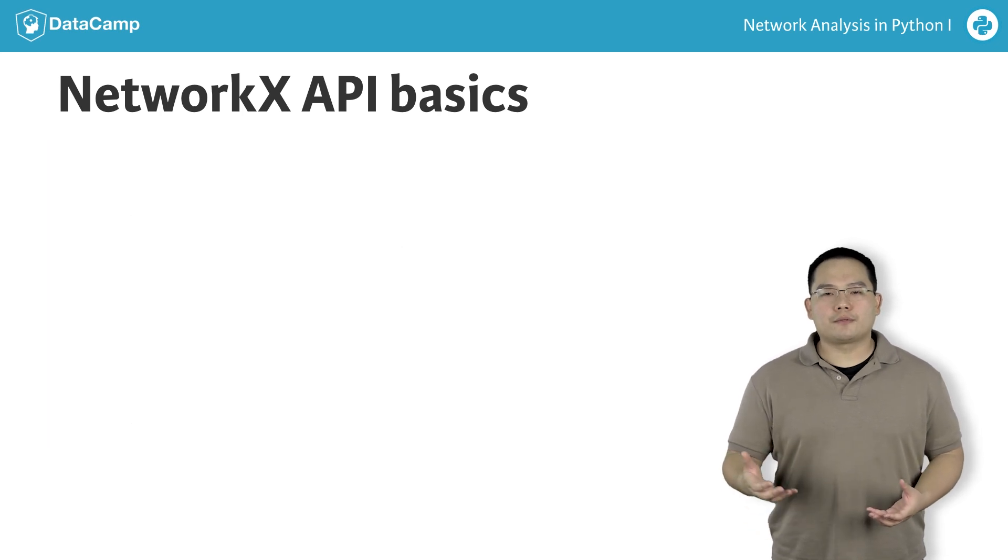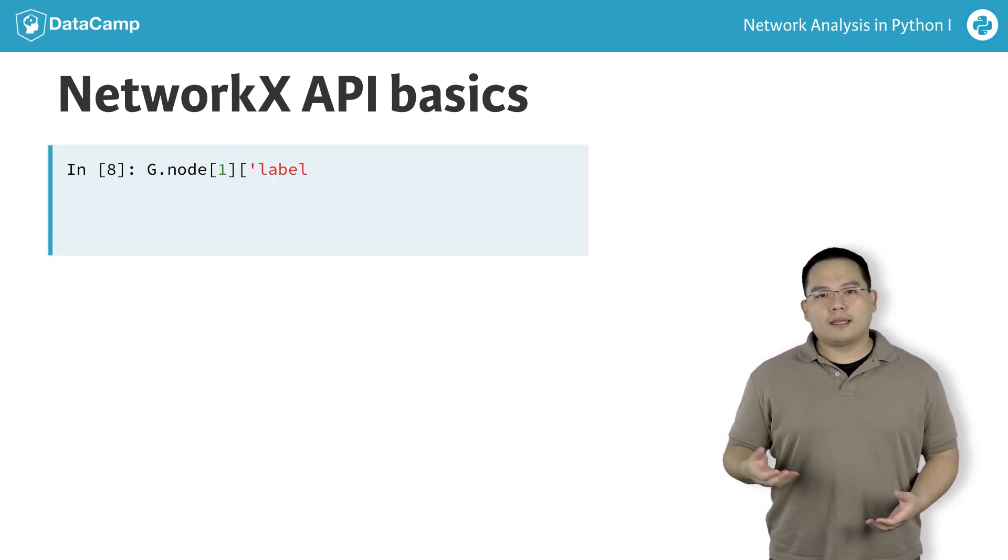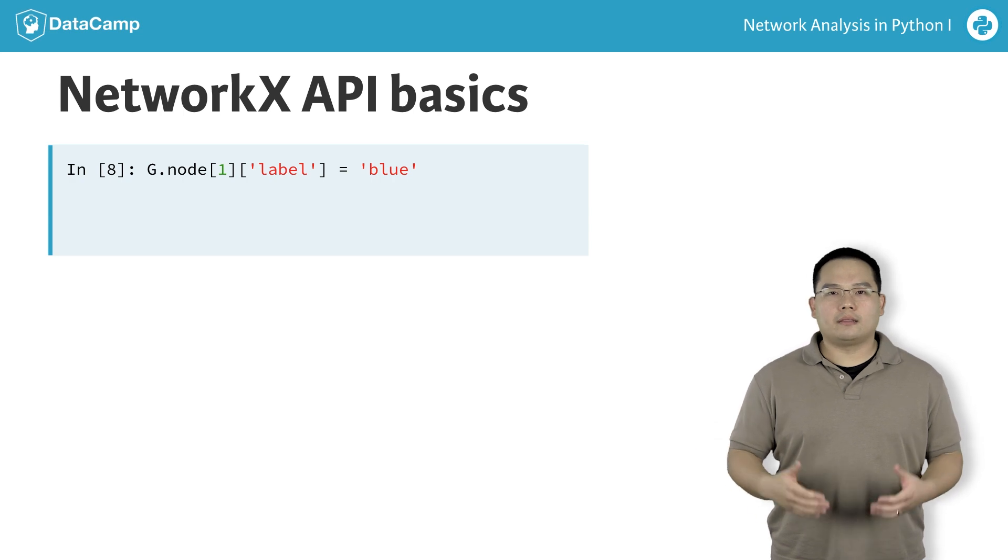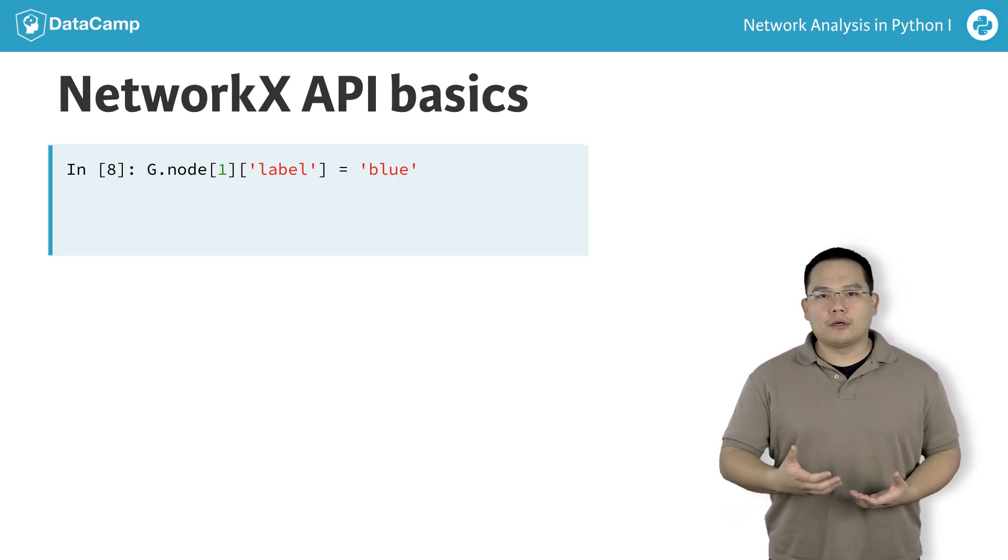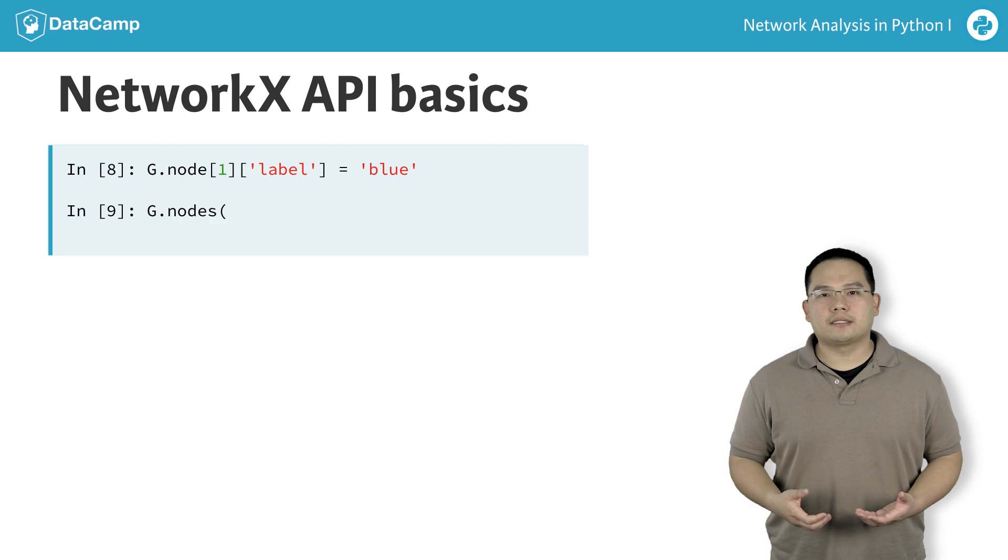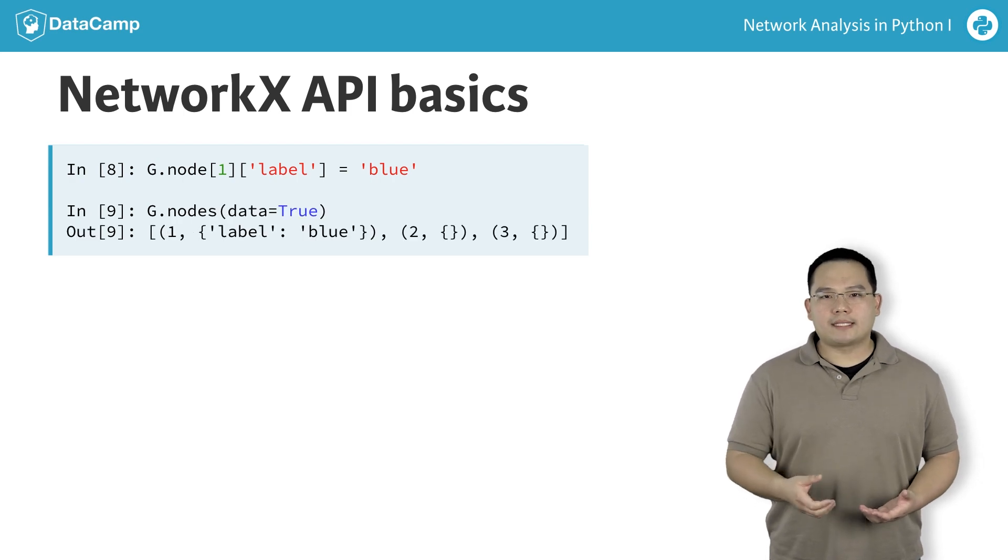Metadata can be stored on the graph as well. For example, I can add to the node 1 a label key with the value blue, just as I would assign a value to the key of a dictionary. I can then retrieve the node list with the metadata attached using g.nodes, passing in the data equals true argument.